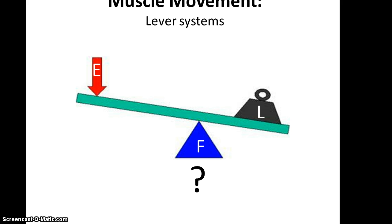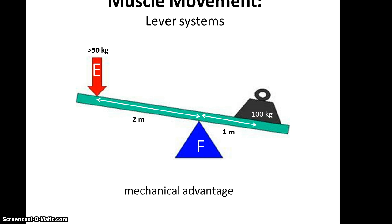Here is a lever system with E for effort, L for load, and F for fulcrum. This is a mechanical advantage because the fulcrum, represented by the triangle, is closer to the load than it is to the effort. Using math, if you have a hundred kilogram load that's one meter from the fulcrum, then all you need is an effort slightly greater than fifty kilograms of force if that end of the lever is two meters away. We're not doing any math in this class, but some people can appreciate this better seeing numbers.